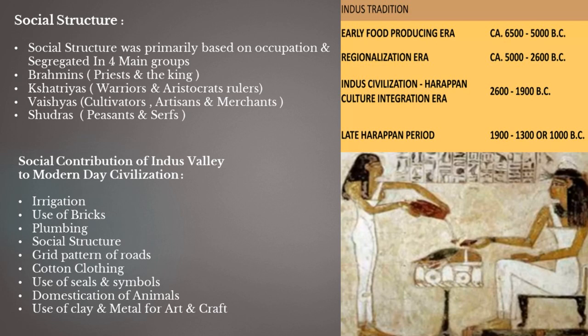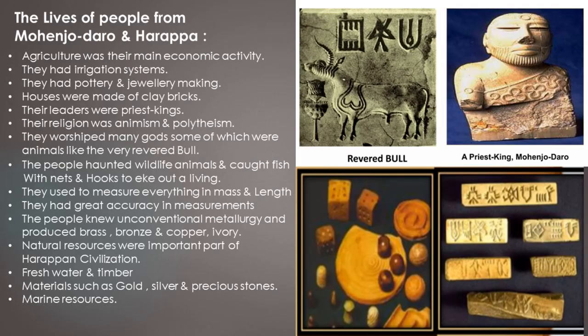The social contributions of Indus Valley Civilization were significant. They started irrigation, used bricks in houses and structures, and plumbing was a main feature. They lived in groups and planned cities in a grid pattern. They used and produced cotton, made seals and symbols, domesticated animals, and used clay and metal for art and craft. Agriculture was their main economic activity, with irrigation systems supporting it. Pottery and jewelry making were also practiced. Houses were made of clay bricks, and religion was animism and polytheism — they worshipped many gods, including animals like the river bull.